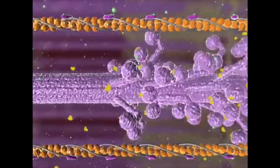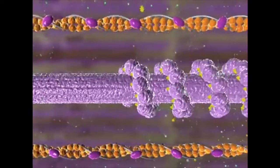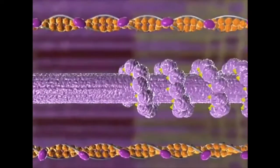When the action potentials stop, calcium ions are pumped back into the ER. The myosin binding sites on actin are again blocked, and the muscle relaxes.